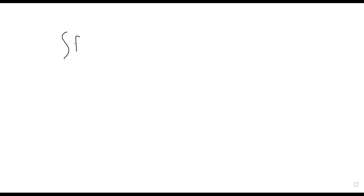Good morning. Today we're going to finish up improper integrals. Yesterday we looked at cases where we have a definite integral from A to B, but one of the limits of integration is an asymptote of the function. I've drawn on the board a case where the asymptote is at the bottom, but at the end of class we also looked at cases where the asymptote was at the top.